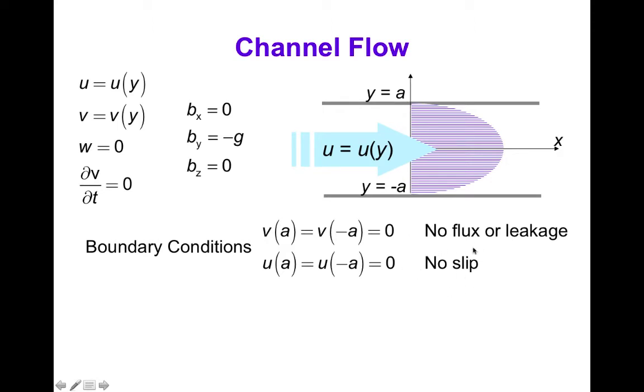Because of the so-called no-slip boundary condition, which is an empirical observation in fluid mechanics that is found to work reliably, the x component of the velocity u is also zero at the boundaries. This is called the no-slip boundary condition, so u at a and minus a is zero.